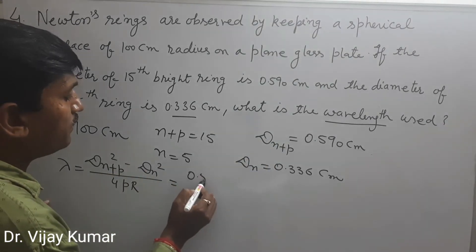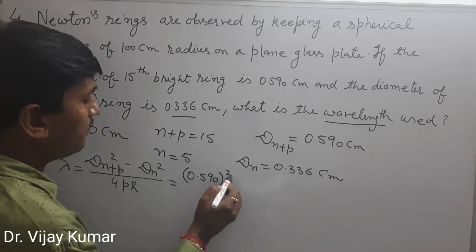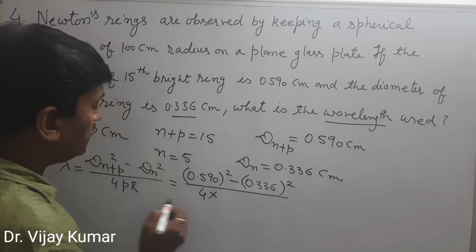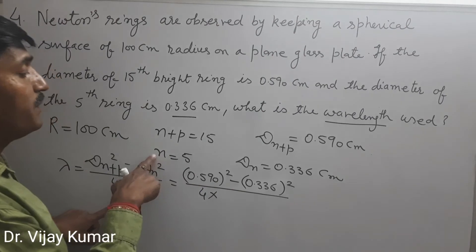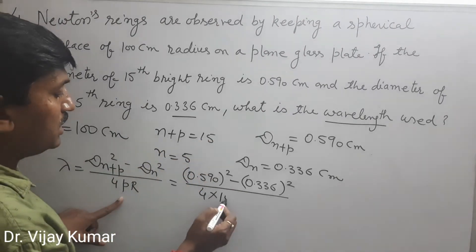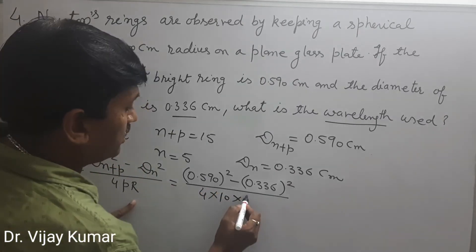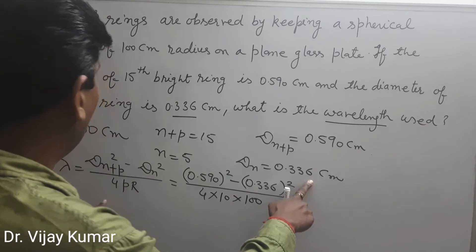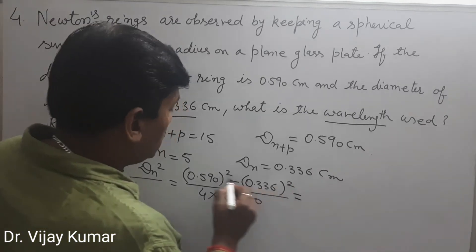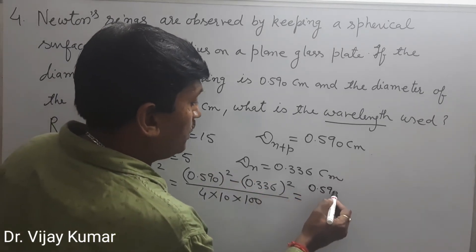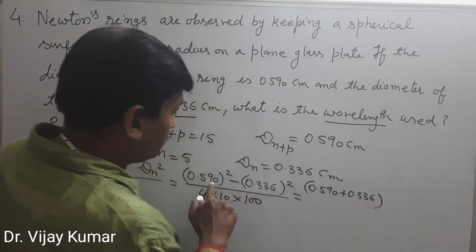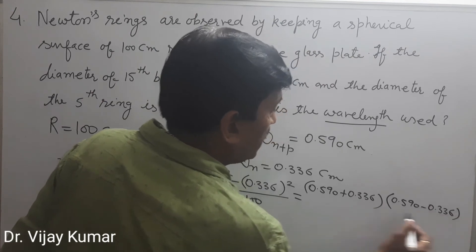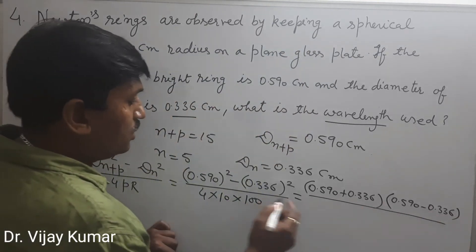Substituting: D(n+p) = 0.59 cm, Dn = 0.336 cm. P represents the difference (n+p) − n, which is 15 − 5 = 10. R = 100 centimeter. All data must be in the same units. Applying the difference of squares: (0.59 + 0.336)(0.59 − 0.336) divided by 4 × 10 × 100.